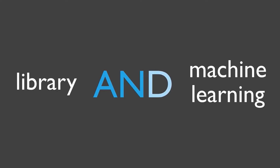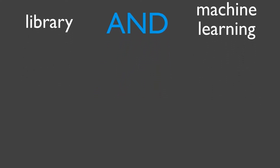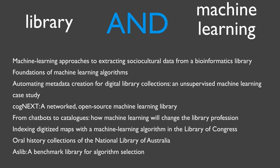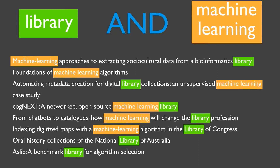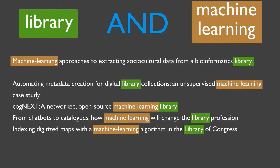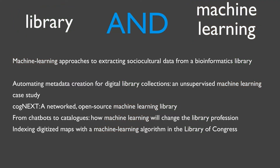When building a search, put AND between two words or between two groups of words when you want your results to contain both of those concepts. In this example, we are asking the search engine to give us every article from this list that has both the words LIBRARY and MACHINE LEARNING. Only the articles that have both parts of the search will appear in our results, so we get these five articles with this search.